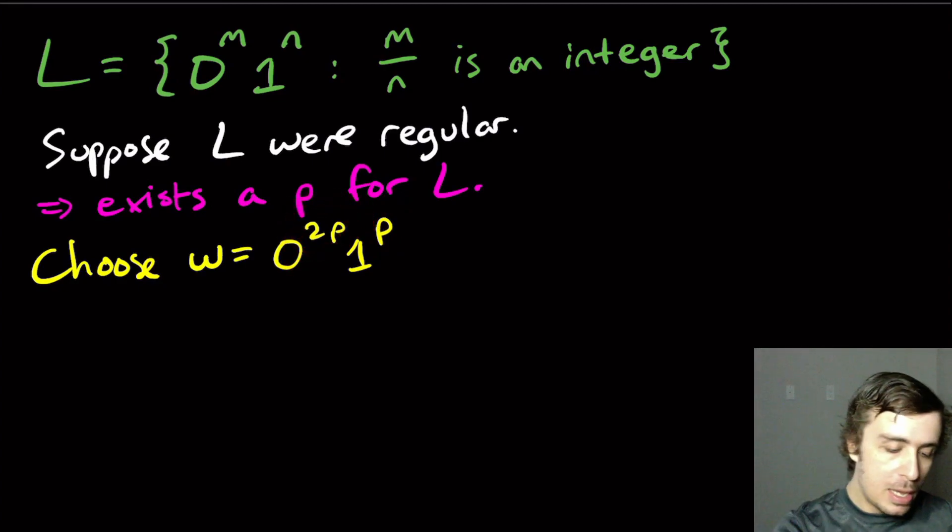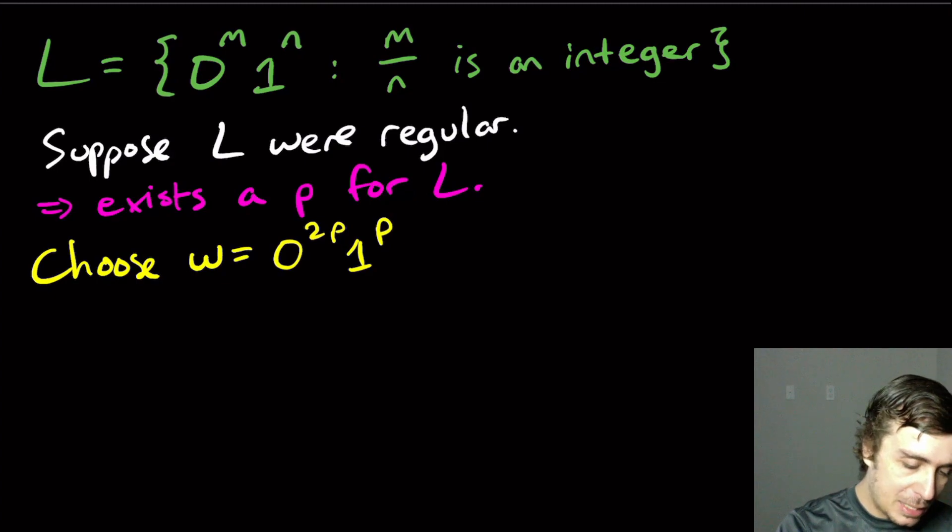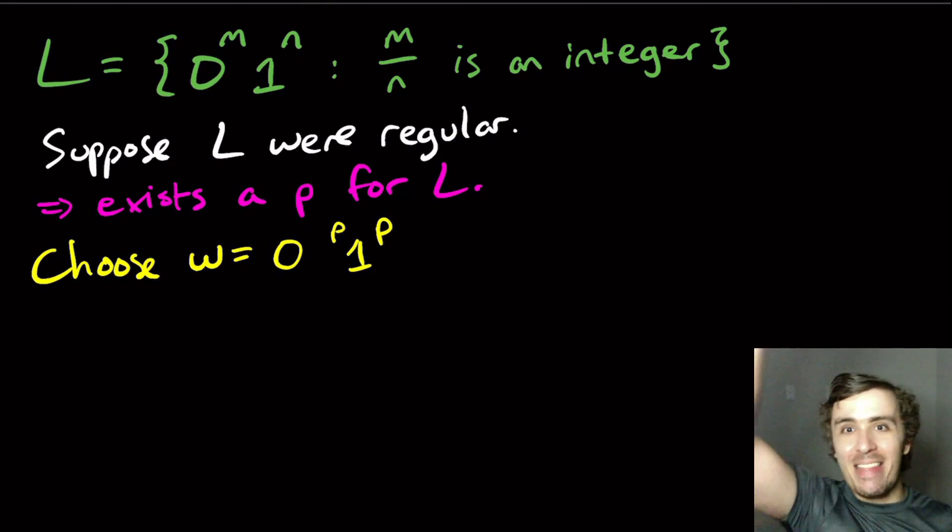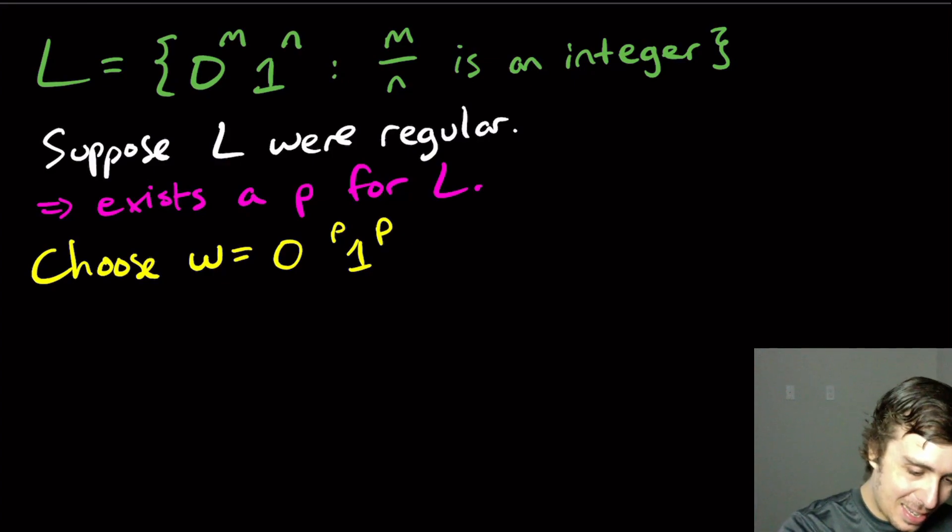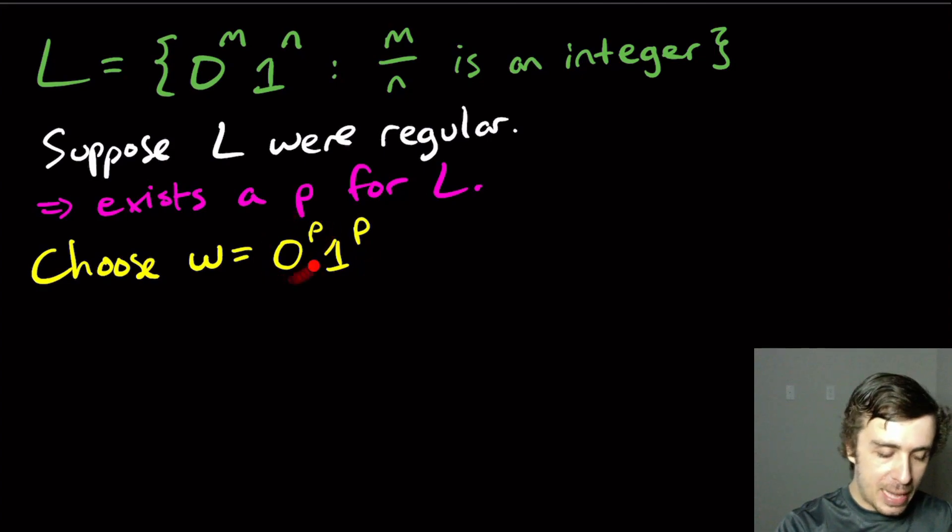So it could be that we can have any number times p over here and p over here and we'll never escape the language because m over n is not an integer. It is always an integer there because we have one p over here and some integer times p over here. If you pump downward, you may think, OK, that's fine because we're going down here and it's not twice as much. It could be that we take away p characters here. And so we'll have zero to the p, one to the p, and that will not help us very much.